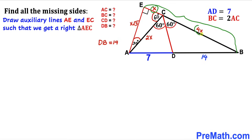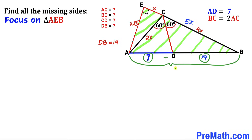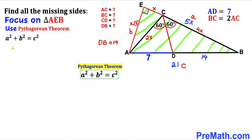Now let's focus on right triangle AEB, whose legs are 5x and x√3. The hypotenuse AB equals AD + DB = 7 + 14 = 21. We apply the Pythagorean theorem: (5x)² + (x√3)² = 21².